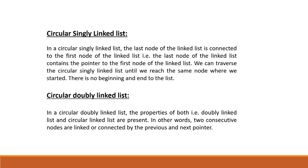In a singly circularly linked list, the last node's next pointer will be connected to the head of the first node. There should be no beginning or ending of that list. In a doubly circularly linked list, we have two pointers: previous and next. The next pointer of the last node is connected to the head, and the previous pointer of the first node is connected to the last node, forming a circular structure.